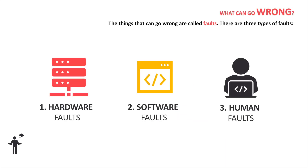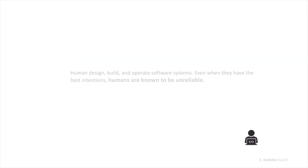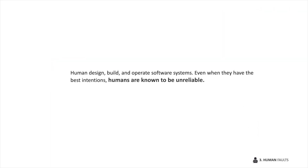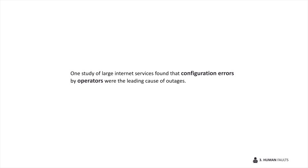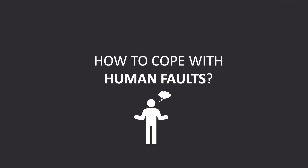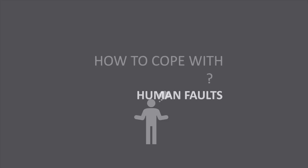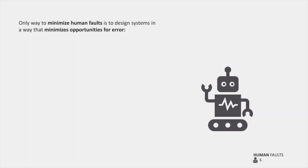Next is human faults. Humans design, build, and operate software systems, and even with the best intentions, humans are known to be unreliable. For example, one study of large internet services found that configuration errors by operators were the leading cause of outages.